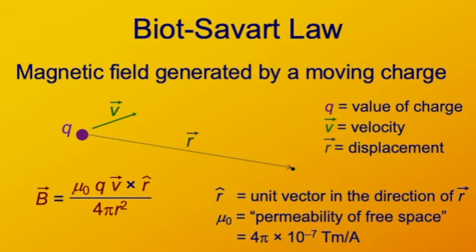Let's look at this formula to see what it tells us about the direction of the magnetic field at the field point. If the velocity V is in the plane of the screen and the displacement R is also in the plane of the screen, the direction of the magnetic field is given by V cross R-hat. Point the fingers of your right hand in the direction of V, then curl them toward R, and your thumb will be pointing into the screen. So the magnetic field at this point is directed into the screen, away from you.